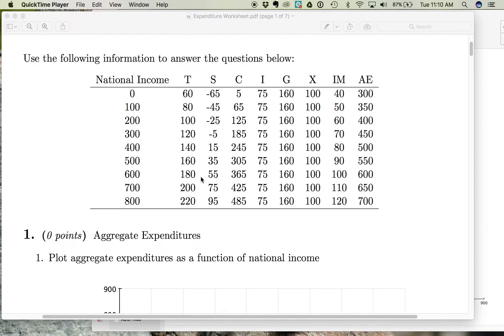Continuing to look at aggregate expenditures, total spending in the economy, and we're breaking it down by looking at its components, C plus I plus G plus X minus IM. In previous videos, we looked at consumption spending and investment spending. Now we want to look at government spending.